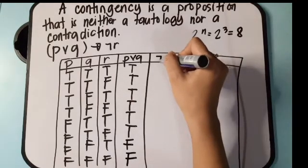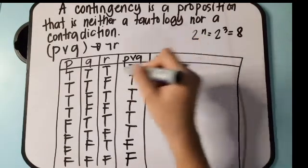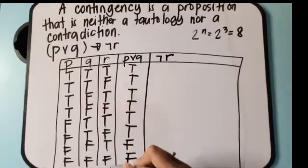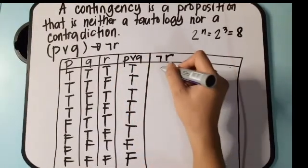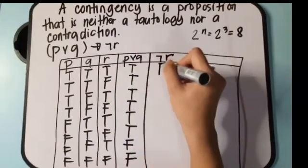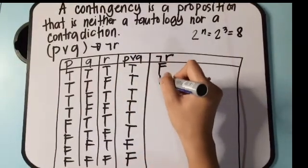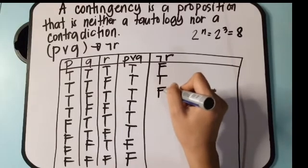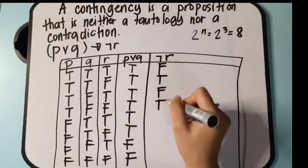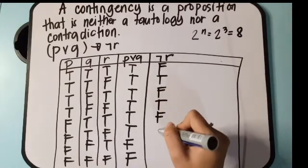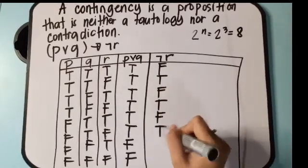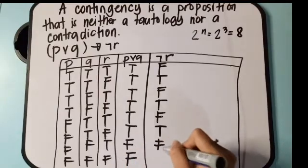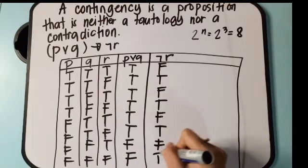Next, let's compute the negation of R — we just negate the R column. The results are: false, true, true, false, false, true, true, false, false, true, true, false, false, true, false, true.